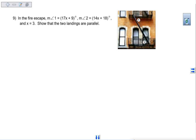Last up, we want to show that the landings are parallel. And what kind of angle pair do we have here? We've got alternate interior angles. And what do we know about alternate interior angles? They're congruent, so we can set these equal to each other.